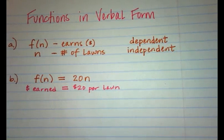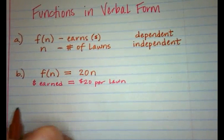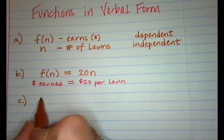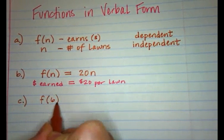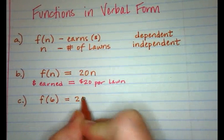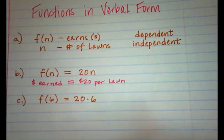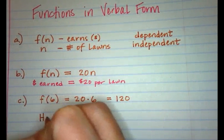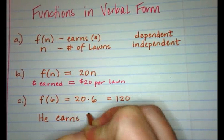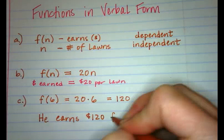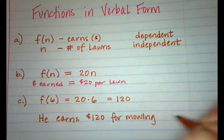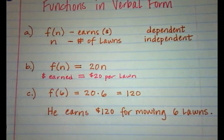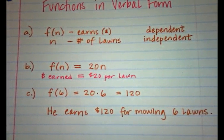Letter C says to determine the total money earned for mowing six lawns. That tells me that n is going to be 6. So I'm going to do 20 times 6, which equals 120. He earns $120 for mowing six lawns. That takes care of the three questions.